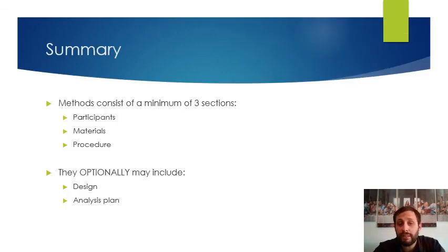So, in summary, methods consist of a minimum of three separate sections. Those sections being one, participants, two, materials, and three, procedures. Additionally, they may optionally include that of design and an analysis plan, depending if you have a complex analysis plan associated with your paper topic. Now, remember, because for this class you're going to be writing a research proposal, in which case you haven't actually performed the research study. Instead, you're proposing a research study to me. You will be writing all of your methods in future tense. Whereas normally in a scientific journal article, you'd be writing this in past tense.